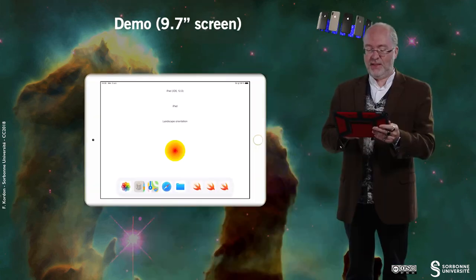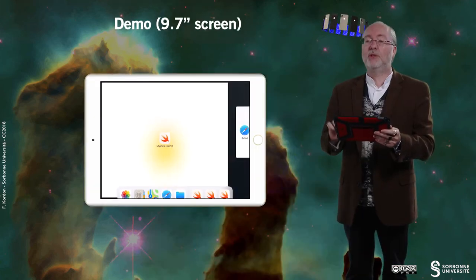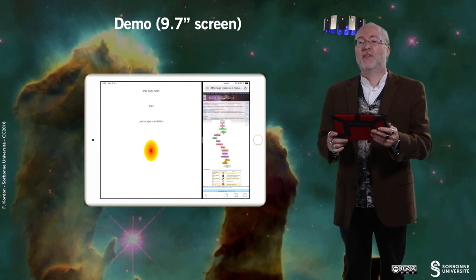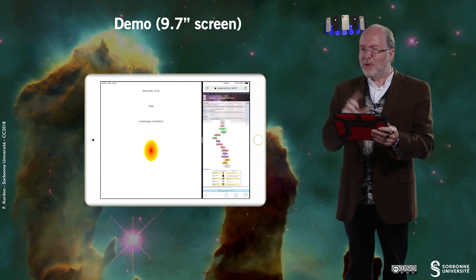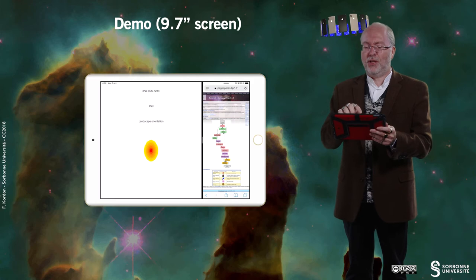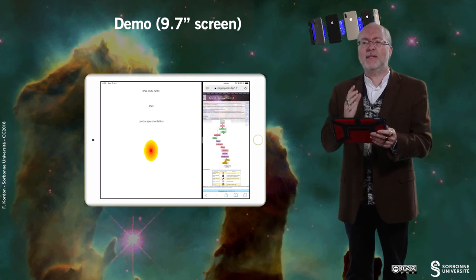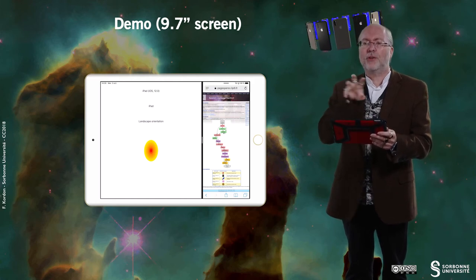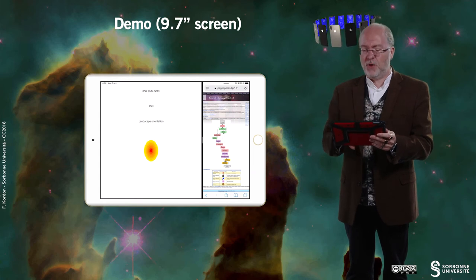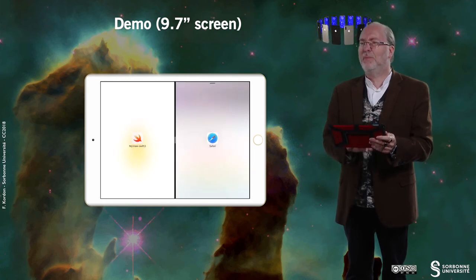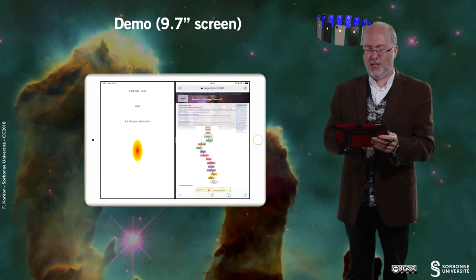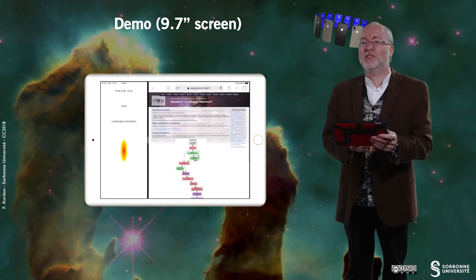But, you can observe that if I split my screen between two applications, then I have this. This is funny because, you see, the label part is still centered. But, the circles are not anymore circles, which is a bit annoying. And, it's even worse here. And, even worse here.